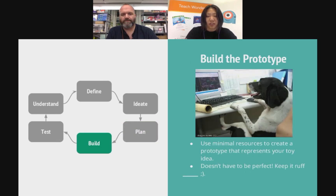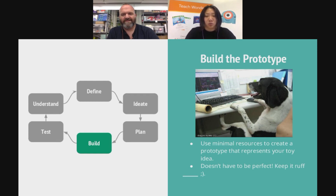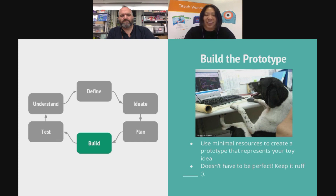Moving to the build phase — you're actually going to build that prototype. Once you identify the resources and materials and know what it's going to look like, use that to inform your building so you can be efficient. With your students, if they get lost in the weeds, tell them to go back to the plan — what's the next thing you need to build? Use minimal resources to create a prototype that represents your idea. Keep it rough — it doesn't have to be perfect. You just want to quickly represent the idea and move on.